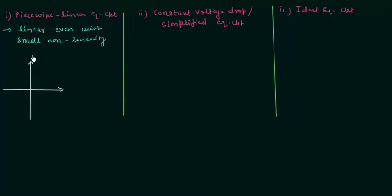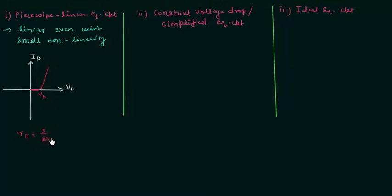The y-axis is for Id and the x-axis is for Vd, the voltage across the diode. If we consider the forward bias condition, we have a curve where this voltage is Vb, the barrier potential. We will try to find out the diode resistance Rd. The diode resistance Rd is equal to 1 divided by the slope of this curve.